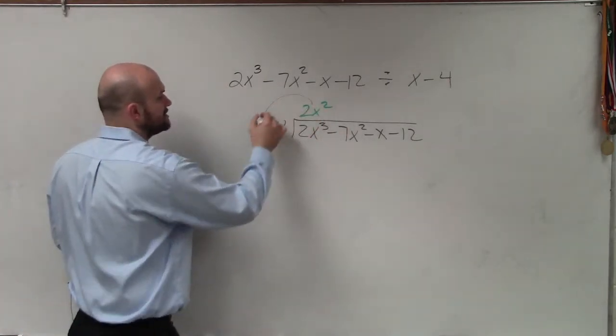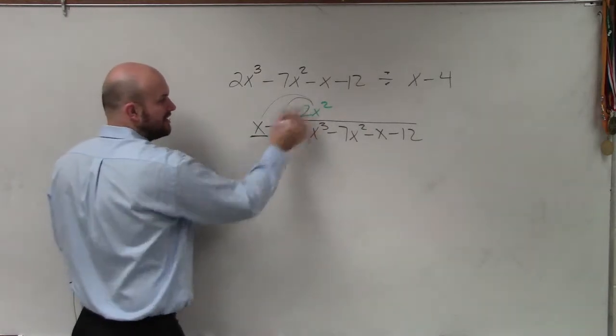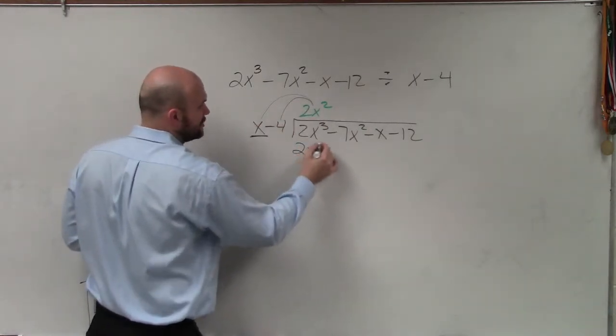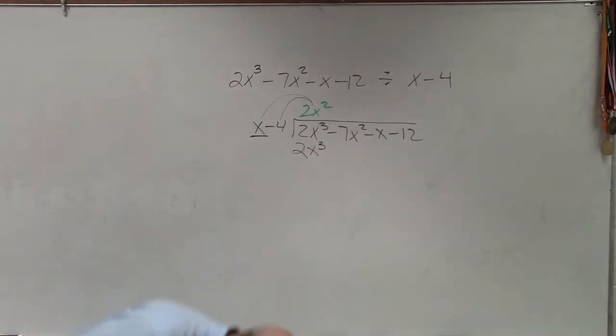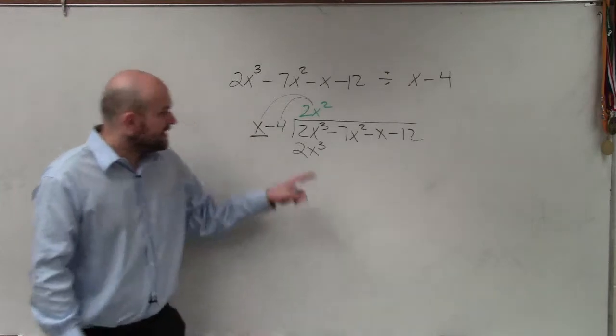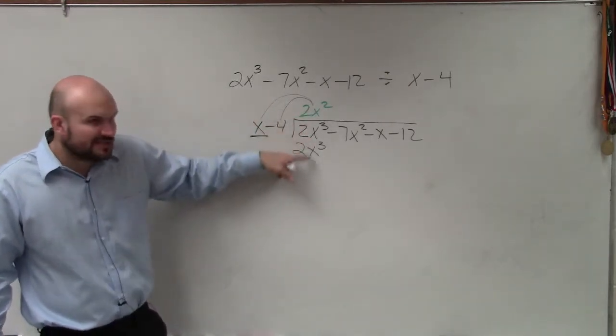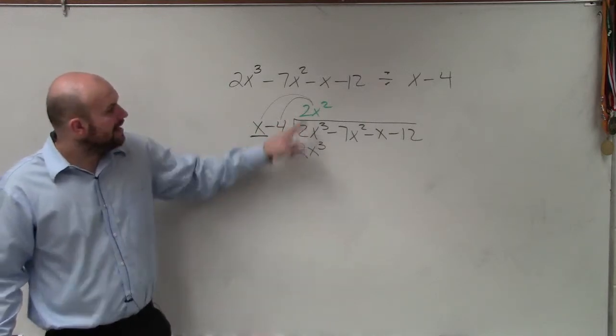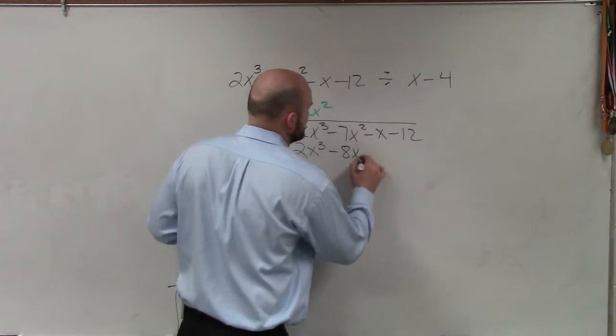Then I multiply 2x squared times x, and I multiply 2x squared times negative 4. 2x squared times x is 2x cubed. What you guys should understand is we're trying to eliminate this value. So whenever you multiply this times your first term, you should get the exact same term again. And then 2x squared times negative 4 is a negative 8x squared.